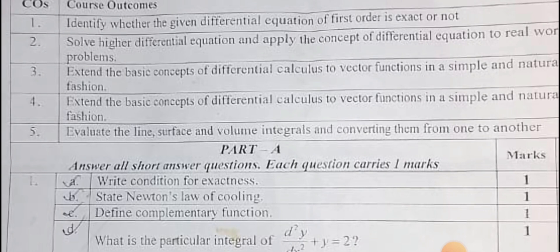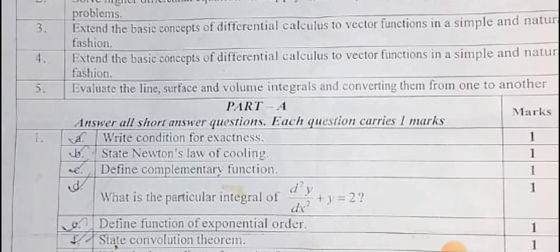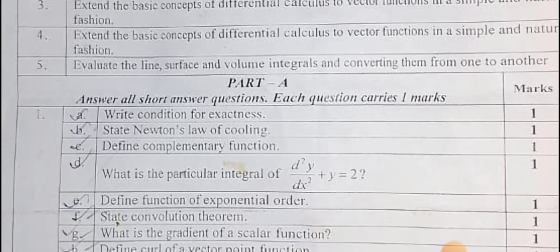As per the question paper, Part A, the first one is write condition for exactness. The important condition is it should look like m dx plus n dy equal to zero, and directly you verify the condition ∂m/∂y = ∂n/∂x. State Newton's law of cooling - a direct statement is there.